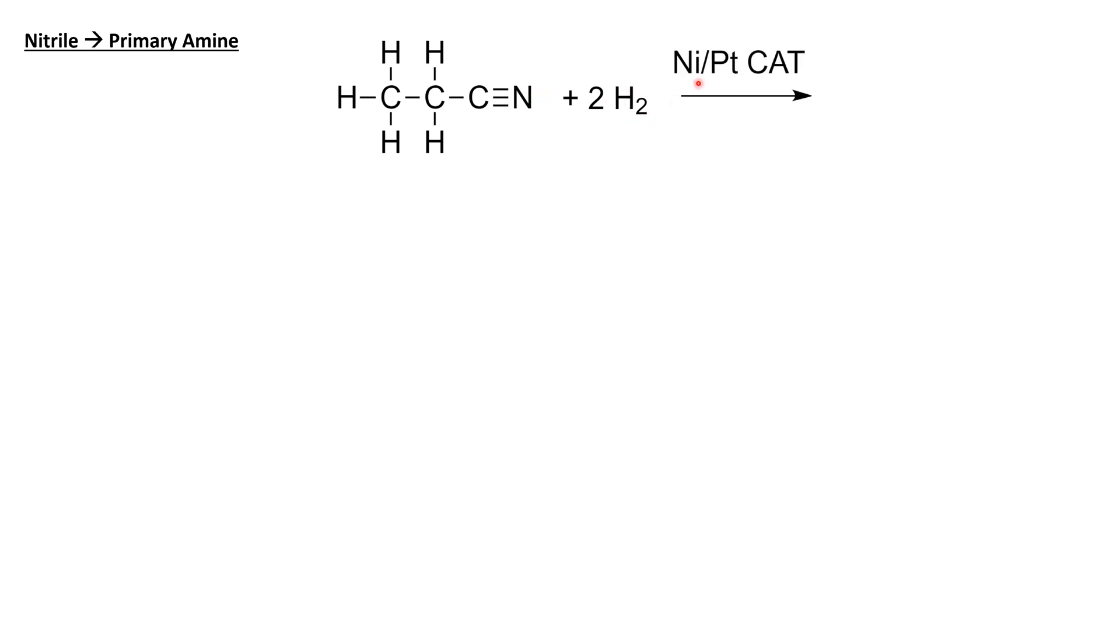Reacting it with hydrogen with a nickel or platinum catalyst will achieve that. This carbon now has two hydrogens on it, but this nitrogen also has two hydrogens on it, so we're now looking at an amine instead of a nitrile. The mechanism for this is called reduction.